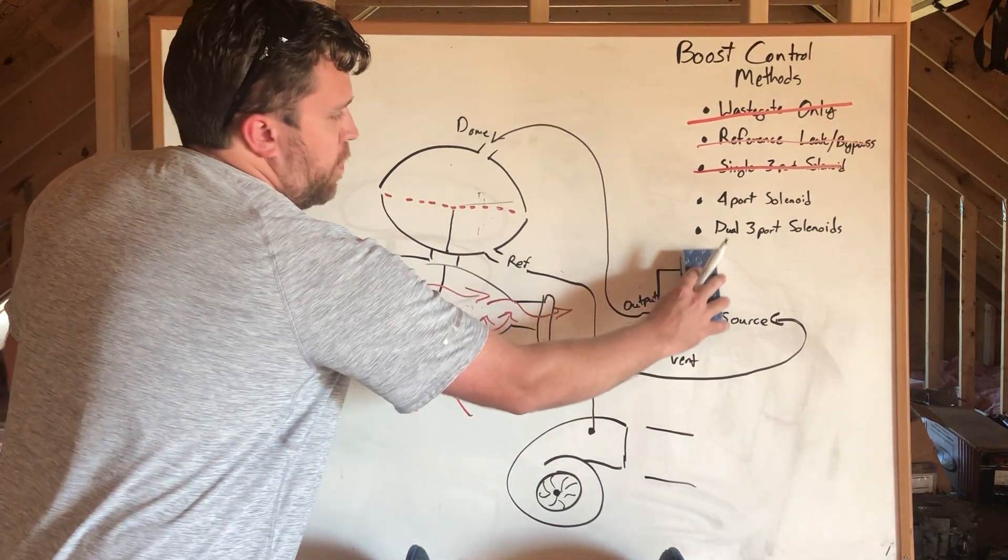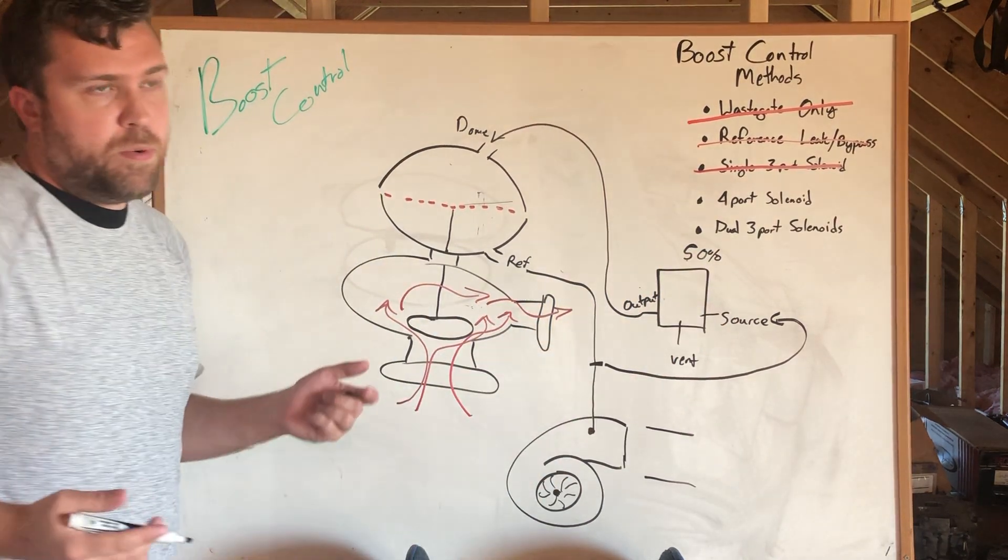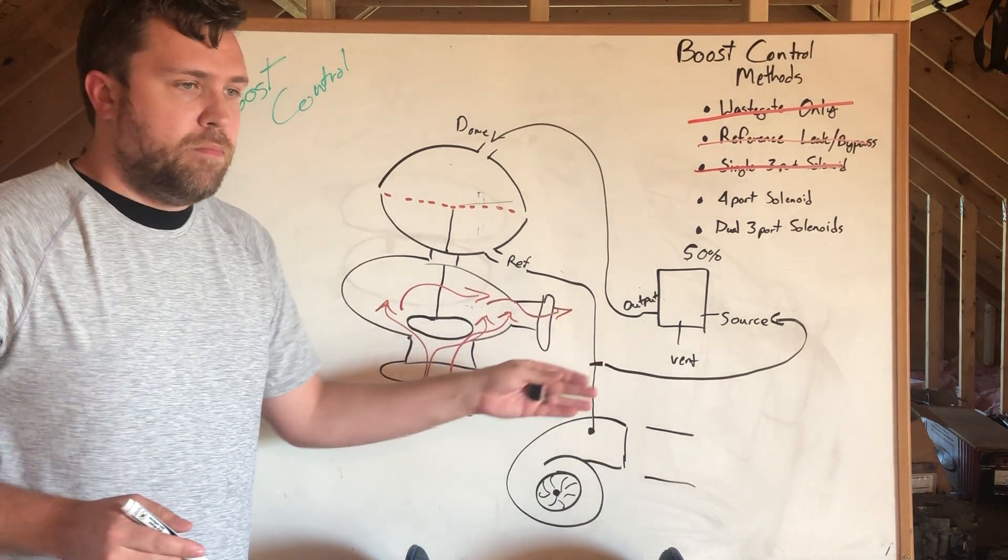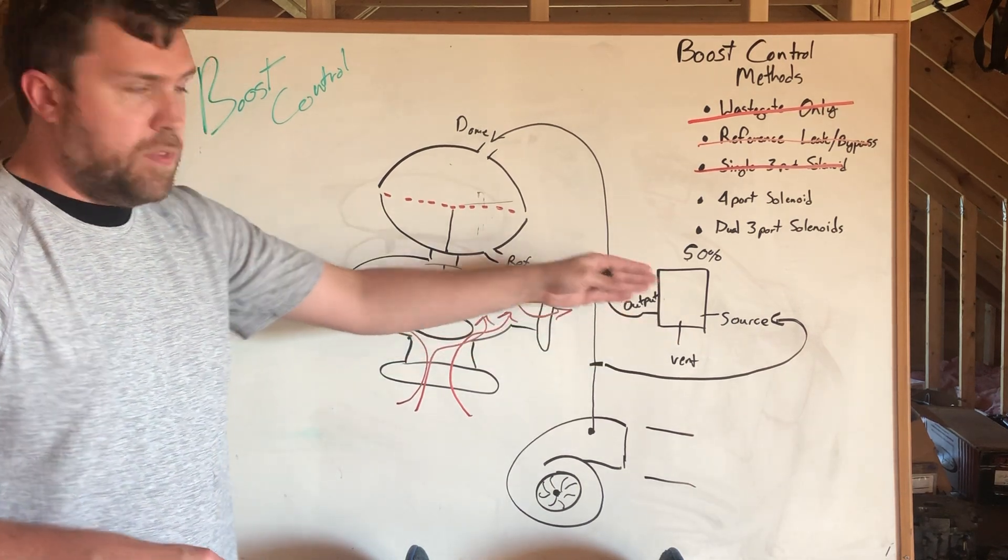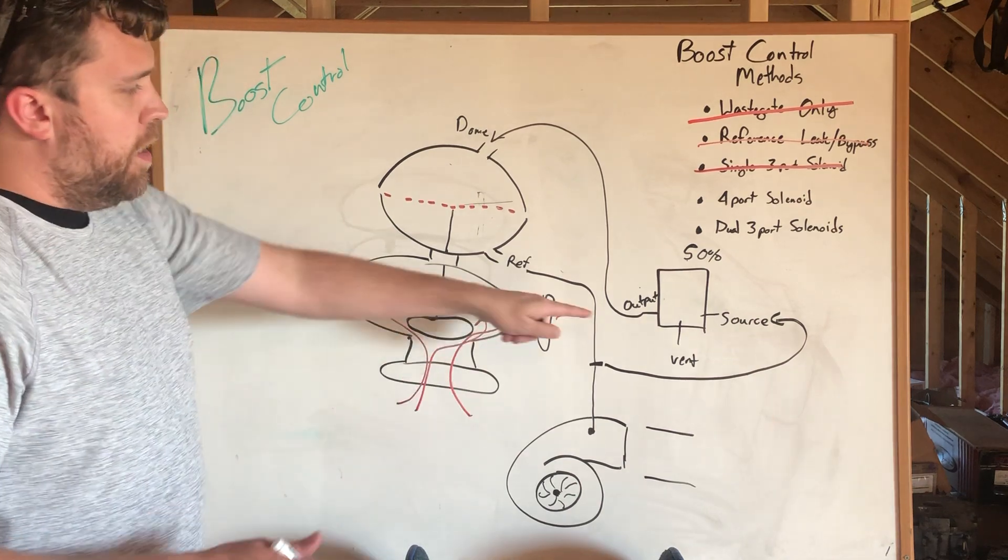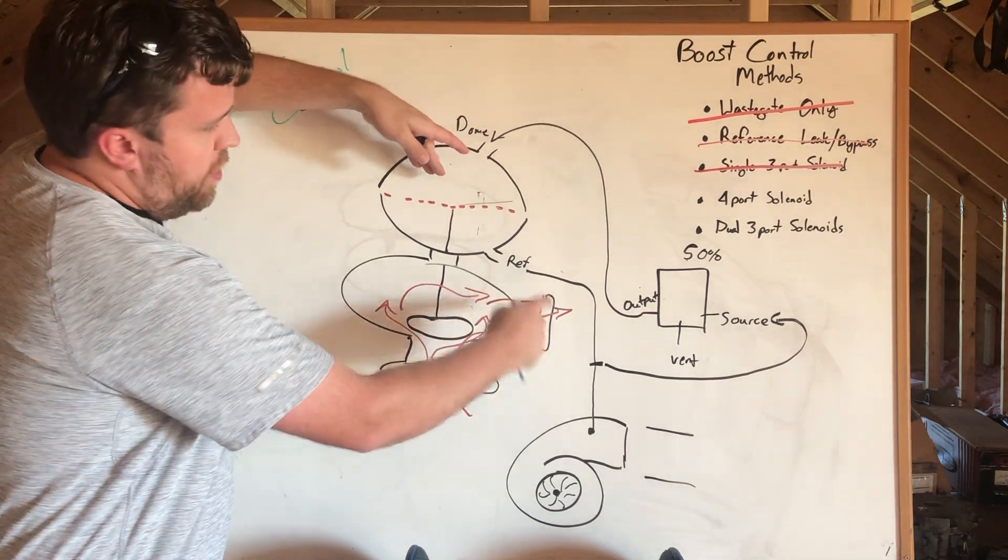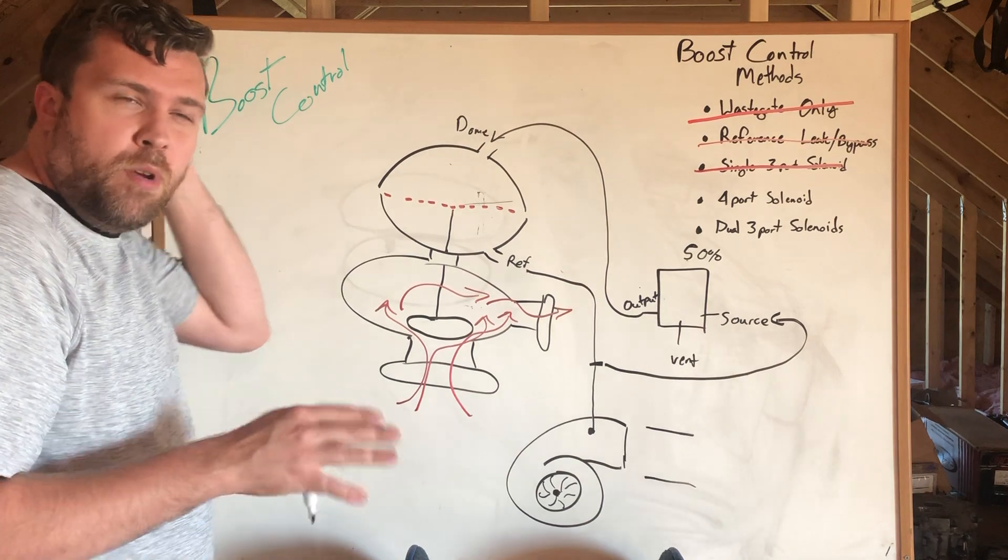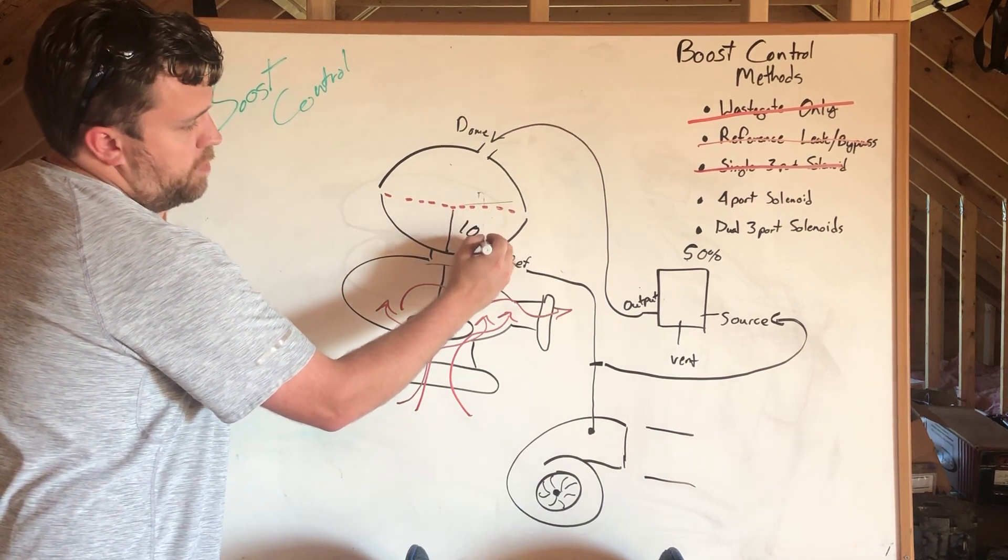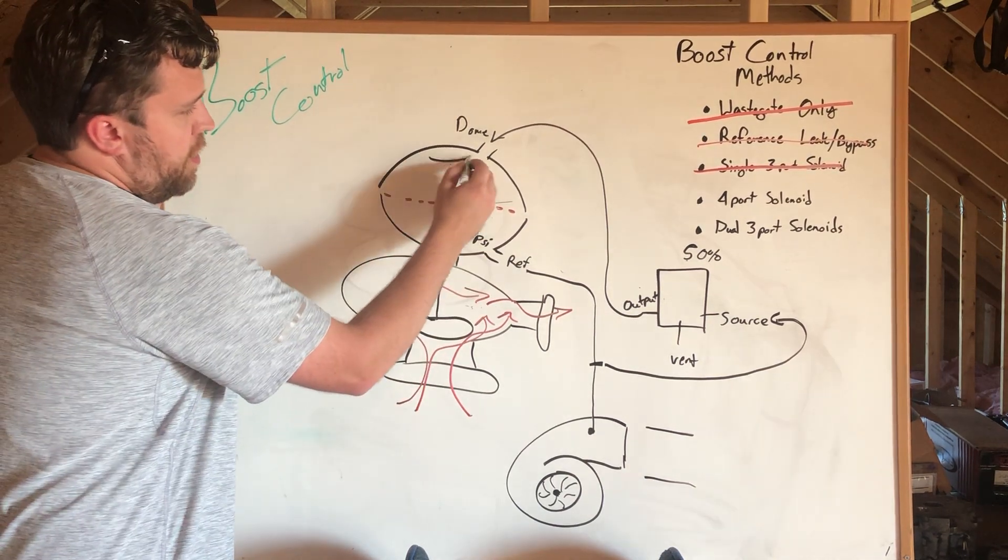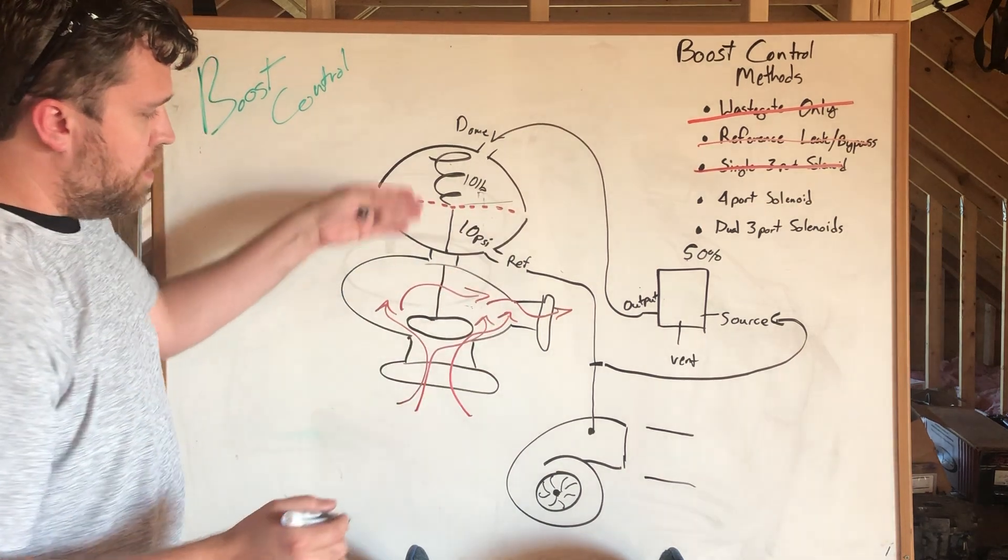Let's change this to 50 percent. All right so now at 50 percent that means that half the time and we're talking in terms of frequency half the time the source pressure is going to the output and half the time it's going to the vent. So what does that mean for us? If the source is half the time going to the output that means that half of whatever is in the reference line roughly is going to the dome and this is kind of a moving target and you'll find that it will settle.